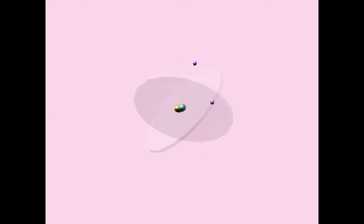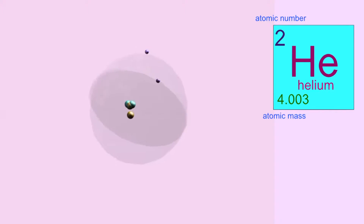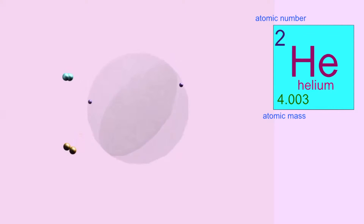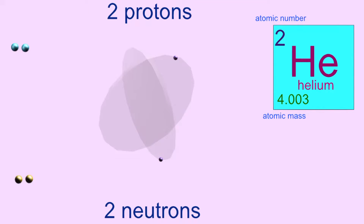The element helium has the symbol He. Its atomic number is 2, indicating that there are two protons in the nucleus and two electrons in orbitals around the nucleus. The atomic mass number is 4, indicating that the nucleus has four heavy particles, two of which are protons and the remaining two are neutrons.